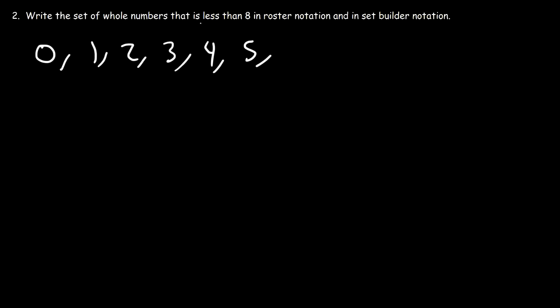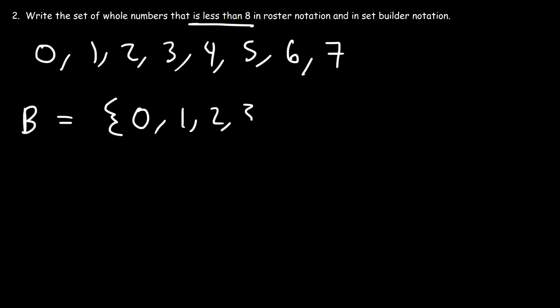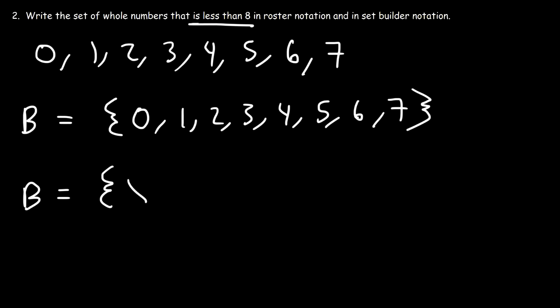We only want numbers less than 8, so we need to stop at 7. Let's use B as the name of the set. In roster notation, set B contains the elements 0, 1, 2, 3, all the way up to 7. In roster notation, you just simply need to list the elements in the set. Now let's describe it using set-builder notation: B is the set of all X such that X is a whole number — I'll use W to represent whole number.